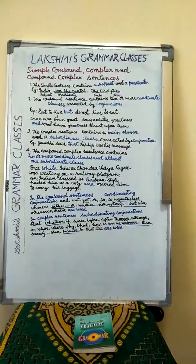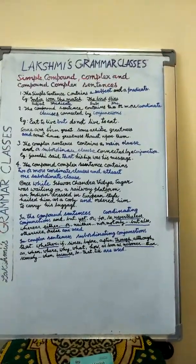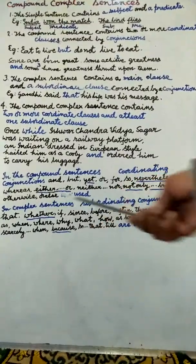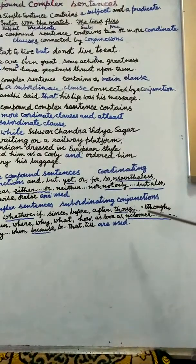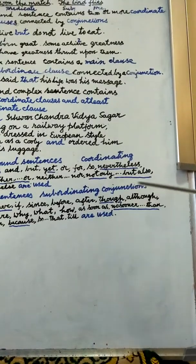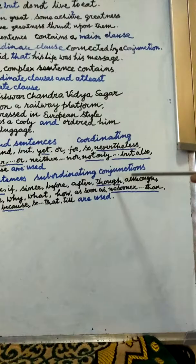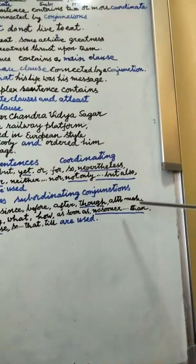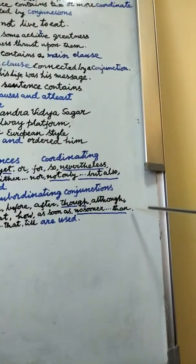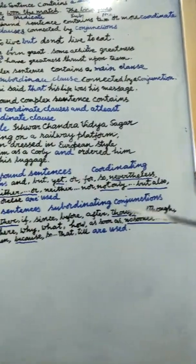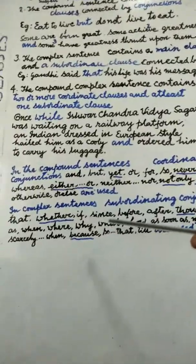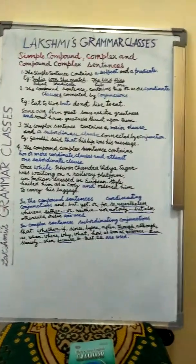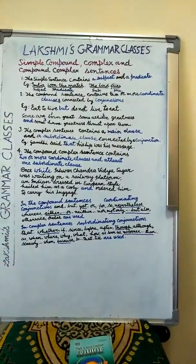Now I am going to give you some examples where these conjunctions are used correctly. 'I don't know whether he liked it or not.' 'Though he is rich, he never helps the poor.' 'No sooner had he reached the station than the train arrived.' 'She sings because she gets pleasure.' These are some of the examples where we used these conjunctions correctly.